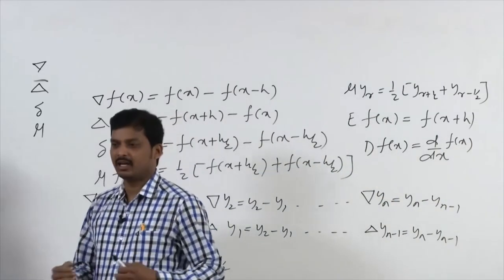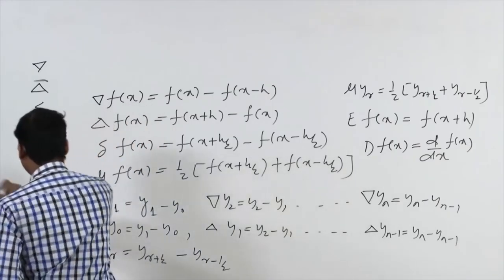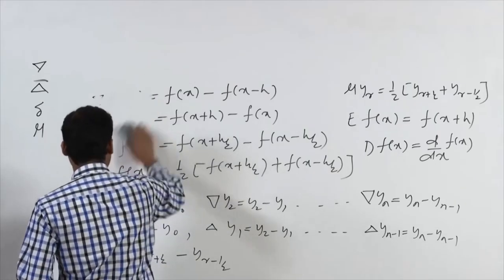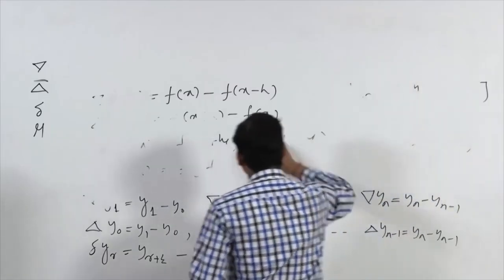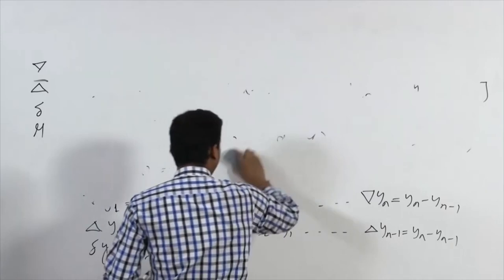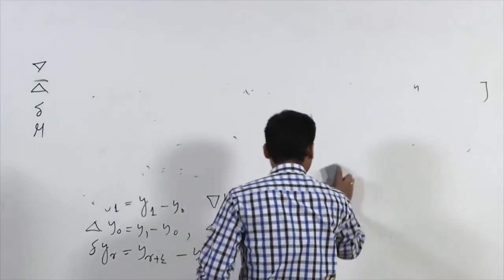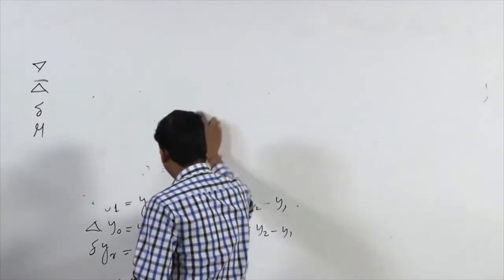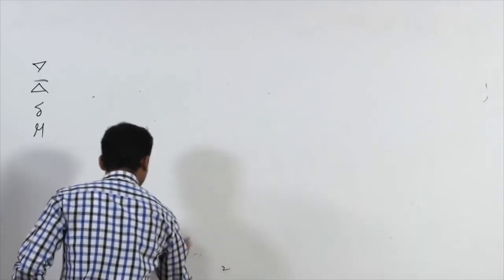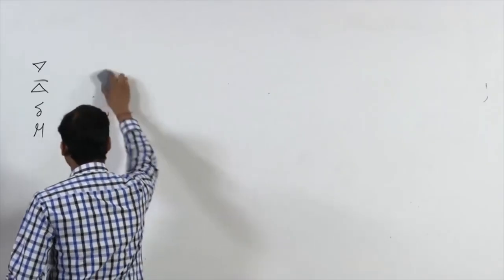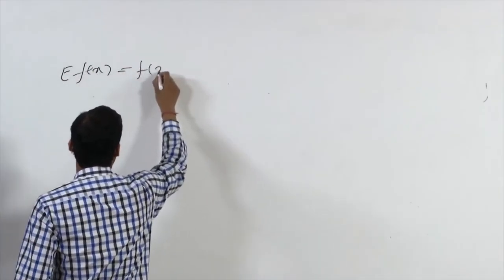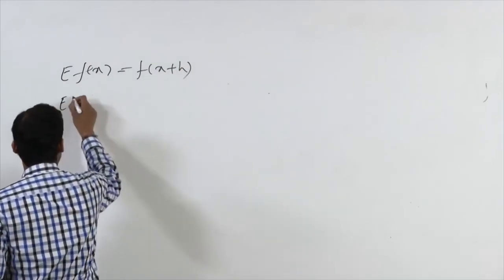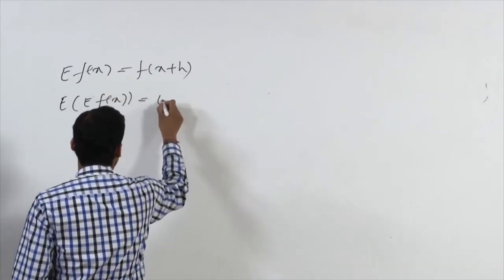To extend these operations, we express delta, nabla, central difference, and average operators in shift operator form. Expressing the shift operator recursively: E[f(x)] = f(x+h), then E[f(x+h)] = f(x+2h). Expanding f(x+h) in a Taylor series, E can be expressed as a shift operator in the form f(x+h).